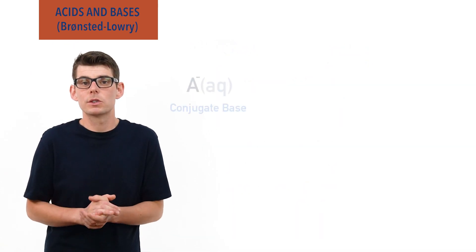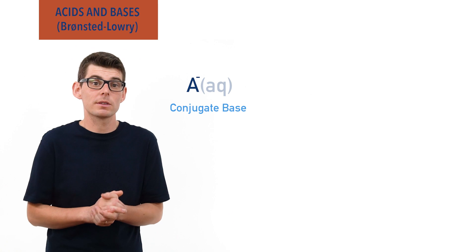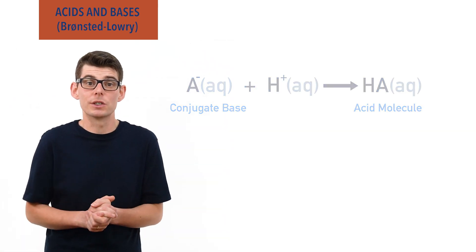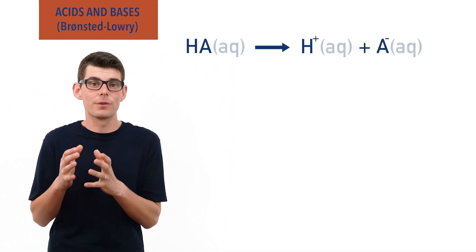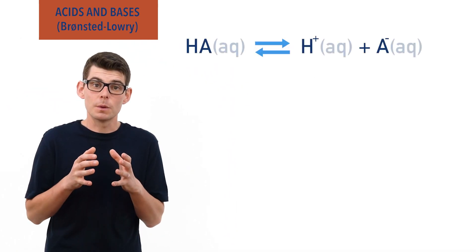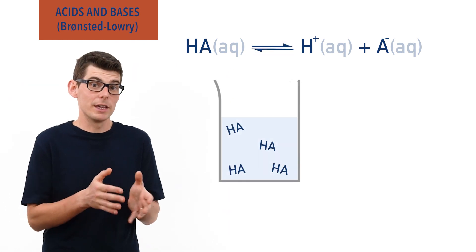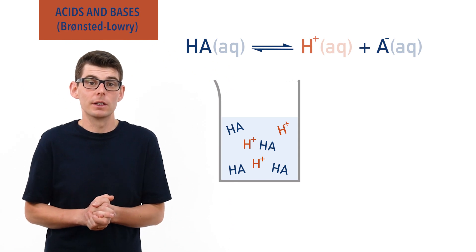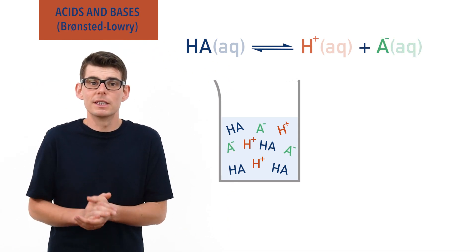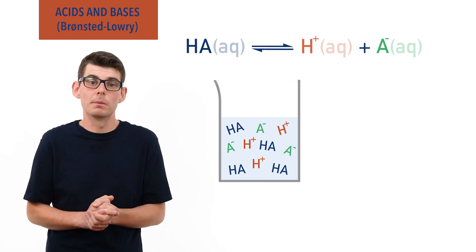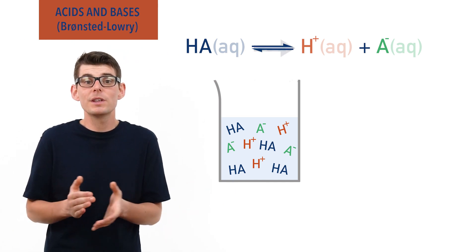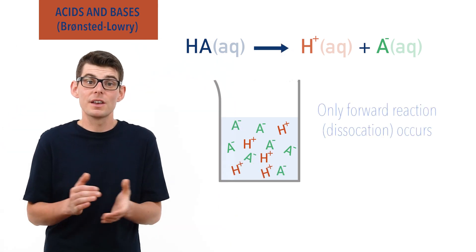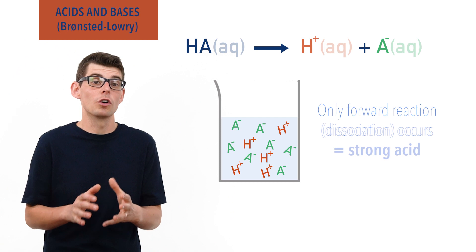If a conjugate base in solution accepts a H+ ion, it would reform the original acid. When an acid dissolves in water, its dissociation is reversible, and there can be an equilibrium established between the acid molecule HA, H+ ions, and the acid's conjugate base ions, A−. For some acids, the position of this equilibrium lies massively to the right, effectively meaning only the forward reaction — dissociation — happens. These kinds of acids are described as strong acids.